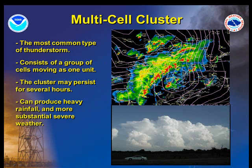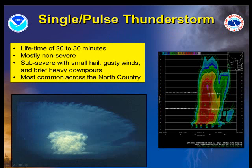The multicell cluster is the most common type of thunderstorm. It consists of large groups of cells, with each cell in a different phase in the thunderstorm life cycle. Multicell thunderstorms produce very heavy rain, downburst winds of up to 80 mph, golf ball sized hail, and occasionally weak tornadoes.